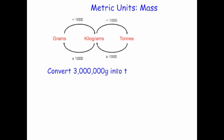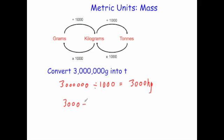Now let's look at what happens if we're going from grams to tons. Convert 3 million grams into tons. To convert from grams into tons, we convert to kilograms first by dividing by a thousand, giving 3,000 kilograms. Then dividing by another thousand gives 3 tons. So 3 million grams is 3 tons.